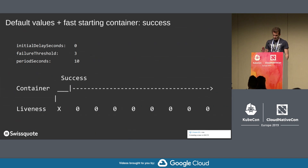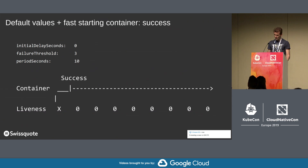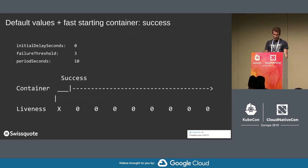Here you can see the default parameters for a probe. Initial delay seconds is the amount of time before probing is activated. Failure threshold is how many consecutive failures will be considered before acting. And period seconds is how often to perform the probe.